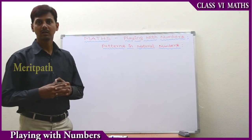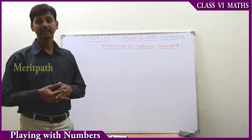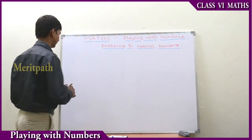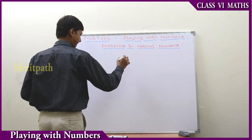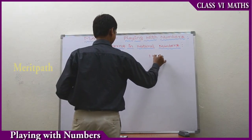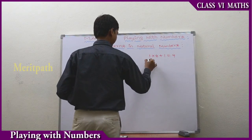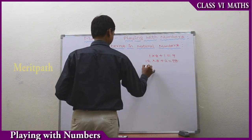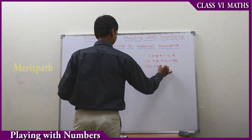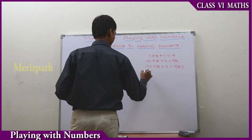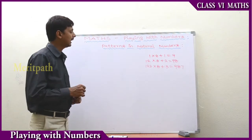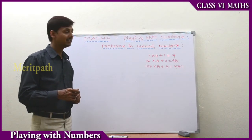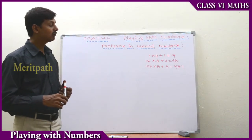When we look at some of the numbers, they will feel so good — some of the patterns will be there in the numbers. So let us see some of the patterns in the numbers. Here we can observe that one of the patterns: 1 into 8 plus 1 is equal to 9, 12 into 8 plus 2 is equal to 98, and 123 into 8 plus 3 is equal to 987.